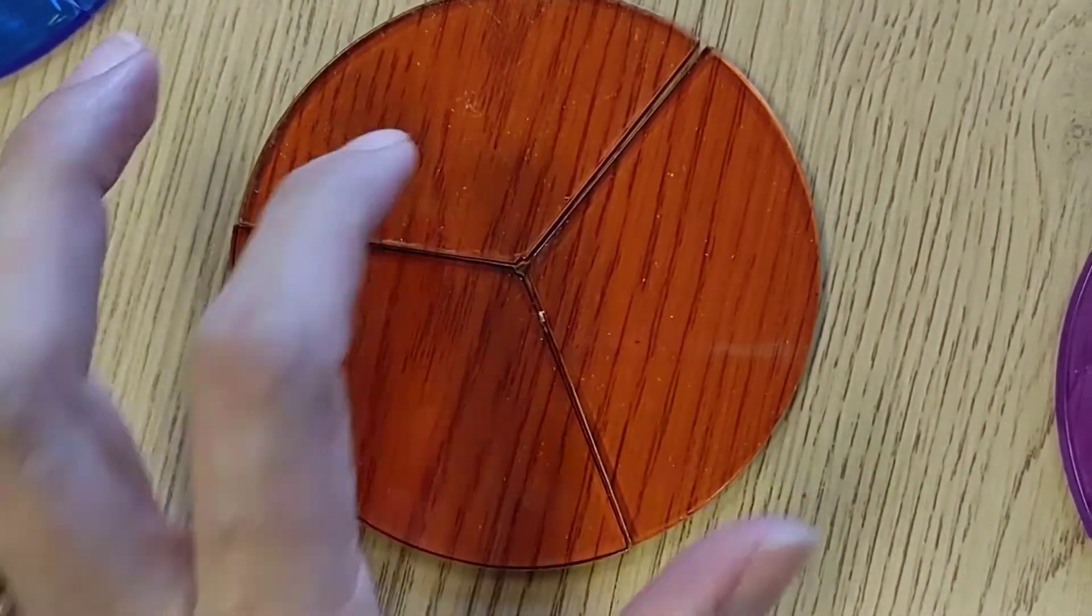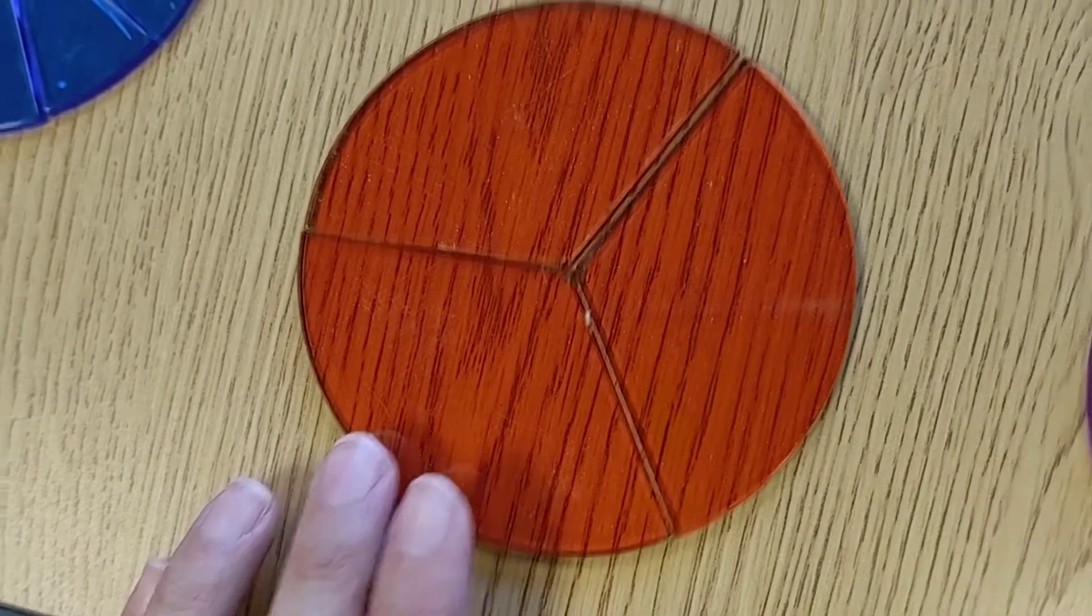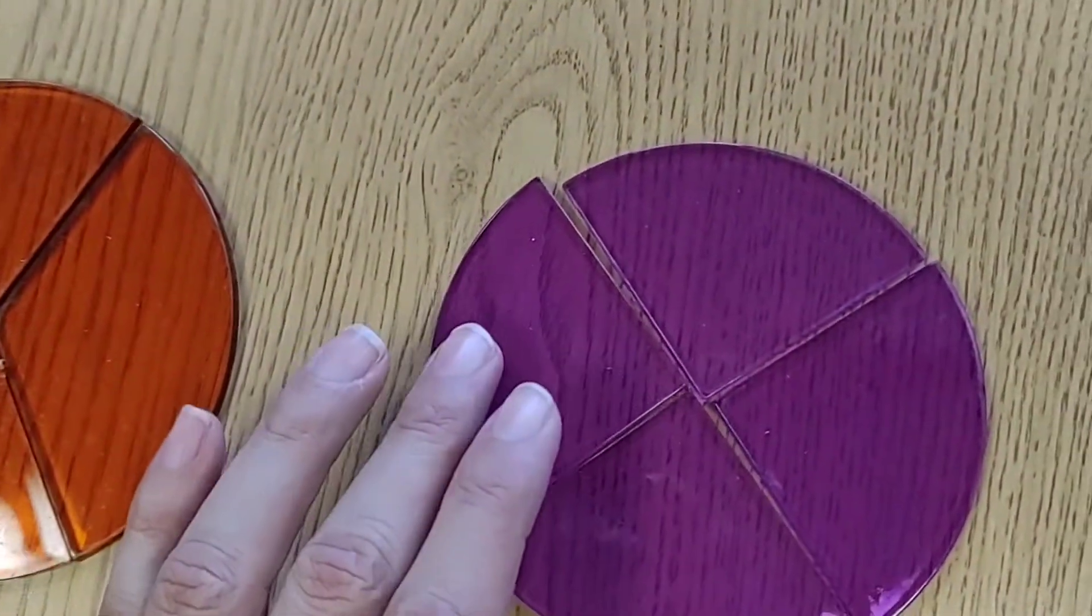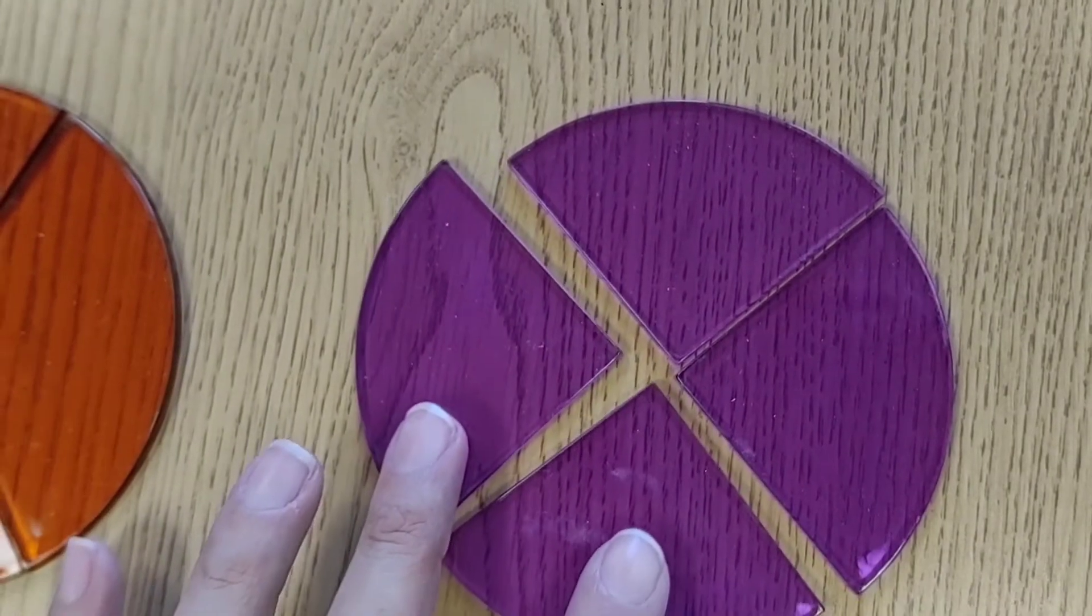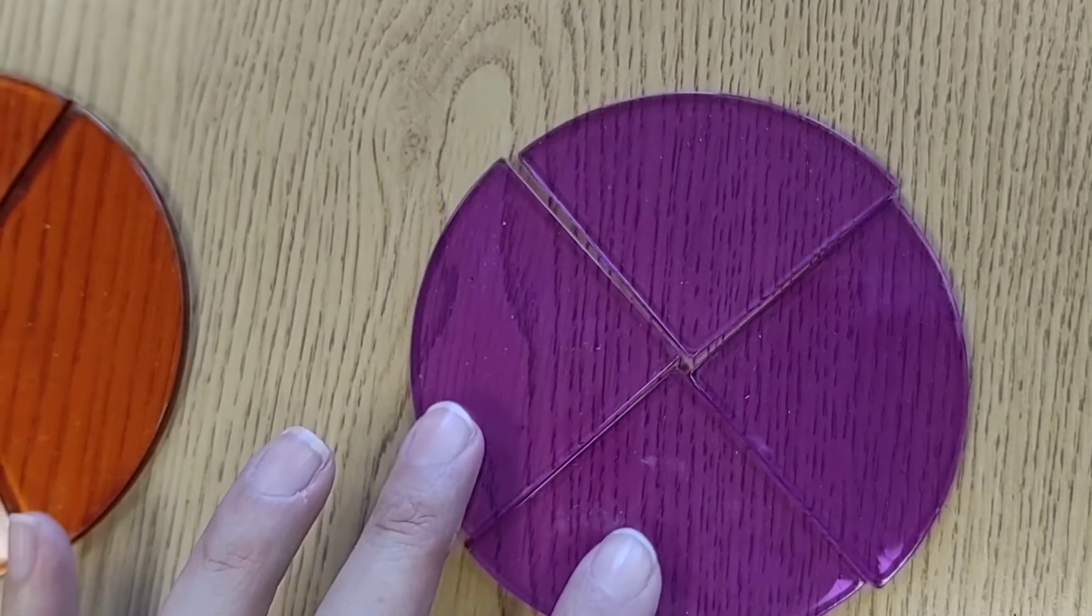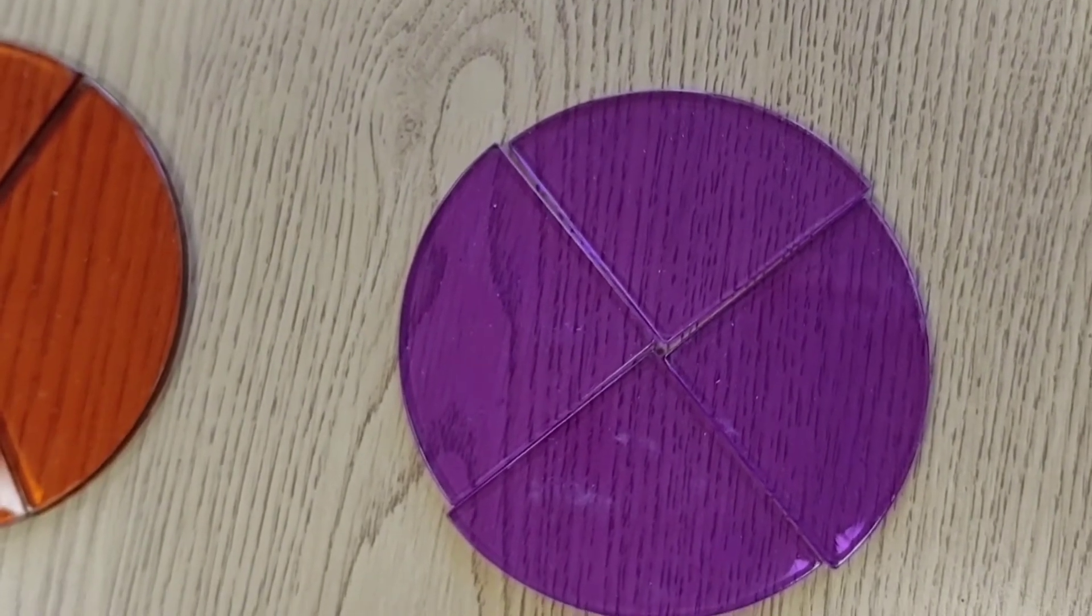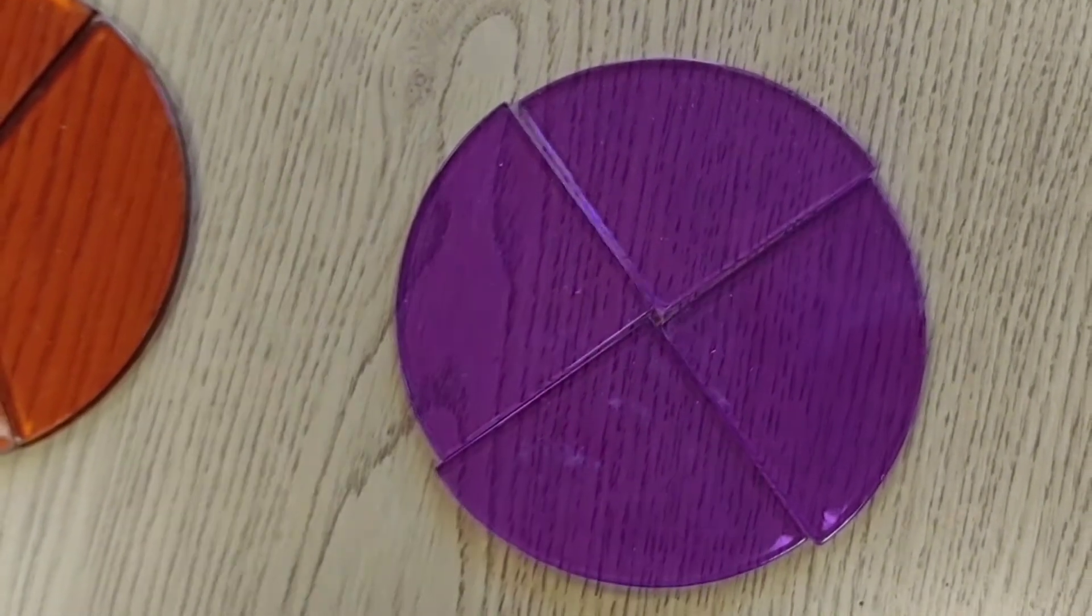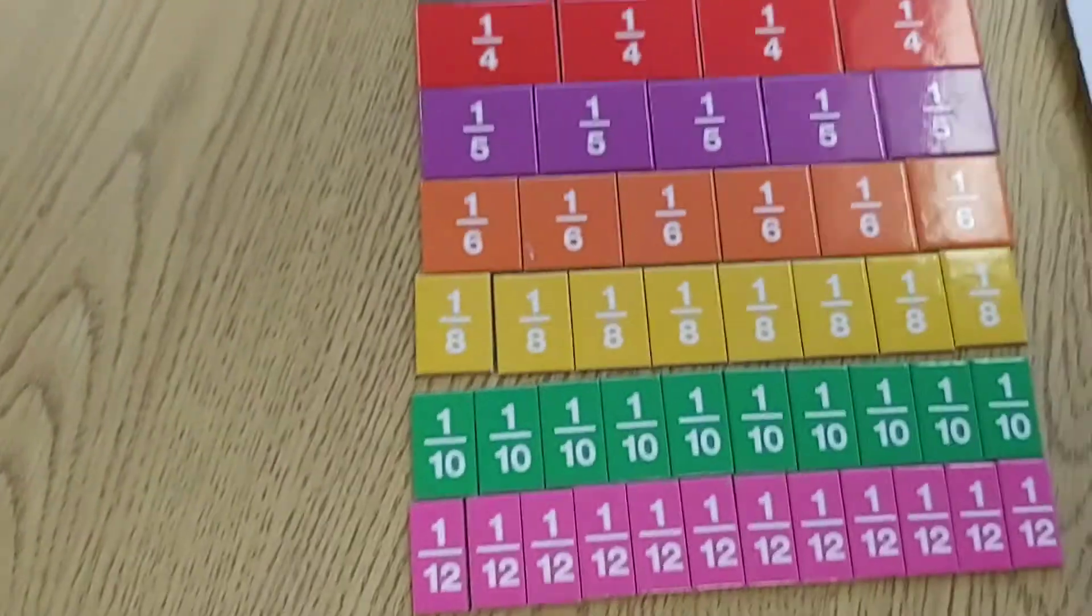We have thirds over here. One, two, three. Those are broken up into thirds. Here's fourths. One, two, three, four. So you'd need four pieces to equal one whole. The important thing to remember about fractions is all of your pieces must be the same size. They must be equal.